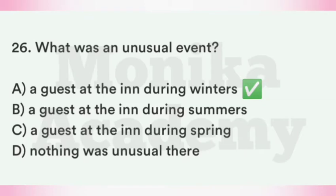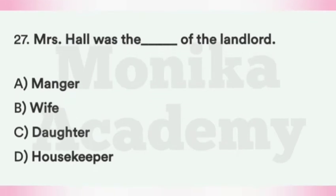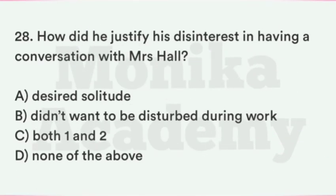Question 27: Mrs. Hall was the ___ of the landlord. Option A: Manager. Option B: Wife. Option C: Daughter. The correct answer is B, Wife — Mrs. Hall was the wife of the landlord. Ipping की जिस inn में Griffin रुका था, वहाँ के landlord की wife का नाम Mrs. Hall था.